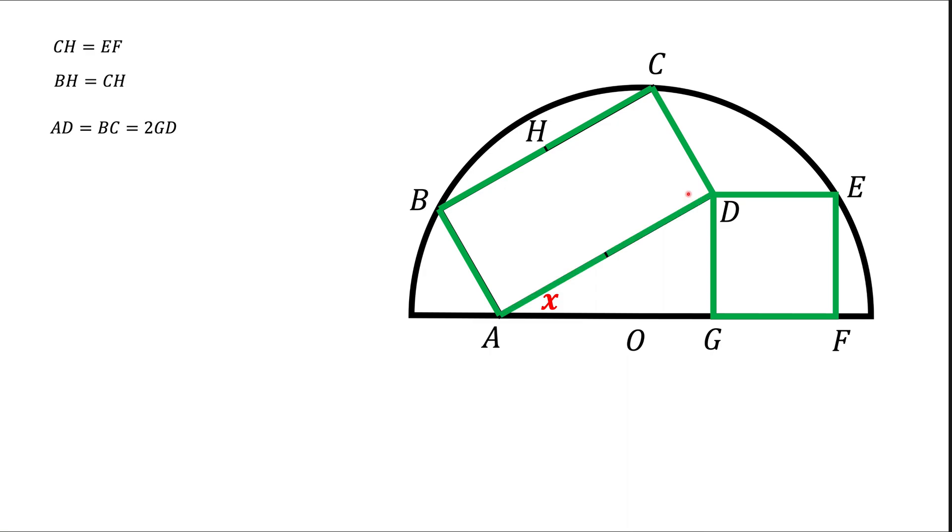And, what we're going to do next, we're going to look at this purple triangle ADG. Notice, this is a right triangle. In the right triangle, it has a leg, DG, which is half of the hypotenuse. And, in the right triangle, whenever we have something like this, the angle opposite of this leg, DG, will be 30 degrees. And, that's the final answer.